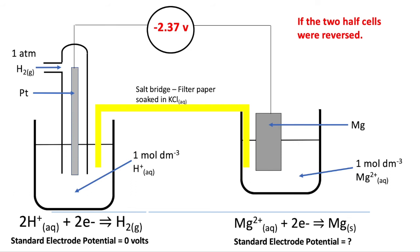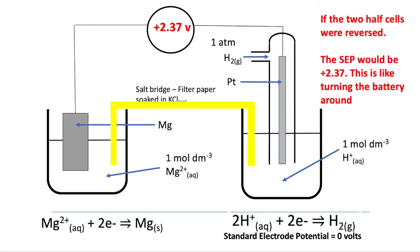Now, we can also think, well, what happens if we reverse our two cells like so? So now the magnesium is on the left hand side and the hydrogen on the right hand side. And if that was the case, then the cell voltage would become a positive value. It's basically turning your battery around the other way. And so we need to be very careful in the way we measure these and how we explain to somebody how we have measured it. Because minus 2.37 and plus 2.37 volts is very different.